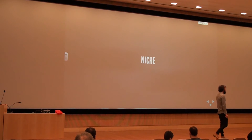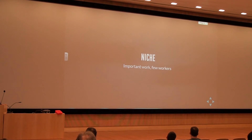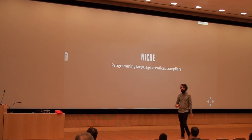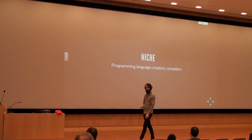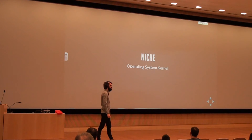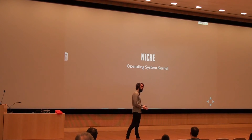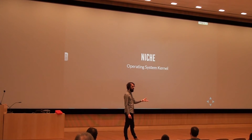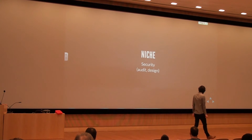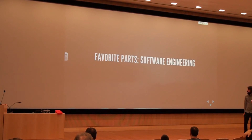There are some other engineering types that are important but employ fewer people. These include programming language developers — actually writing fundamental tools like Java, Ruby, or Python — and the compilers that run them. Operating system internals developers create the fundamentals of things running on your phone (Linux), your laptop (iOS, Windows, or Linux) — not the user-facing parts, but schedulers and hardware-facing code. That's a small but awesome group. And security people — penetration testing and auditing of big software systems.